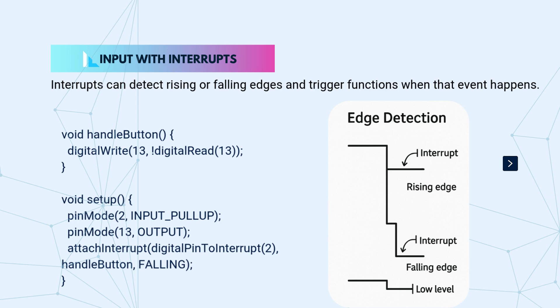This tells the microcontroller: "Hey, watch pin 2. If the signal goes from high to low — meaning the button is pressed — run the handleButton function immediately." So now, instead of looping and checking the pin, the microcontroller can go about its business and only respond when needed. This is especially powerful in real-time systems, where timing and responsiveness matter.